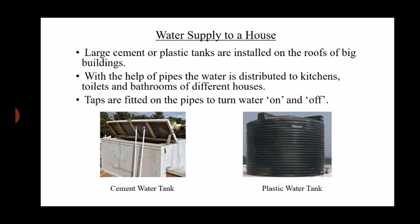Children, using pipes we can distribute water stored in one place to several different places at the same time. Large cement or plastic tanks are installed on the roofs of big buildings. With the help of pipes, the water is distributed to kitchens, toilets and bathrooms of different houses. Taps are fitted on the pipes to turn water on and off.